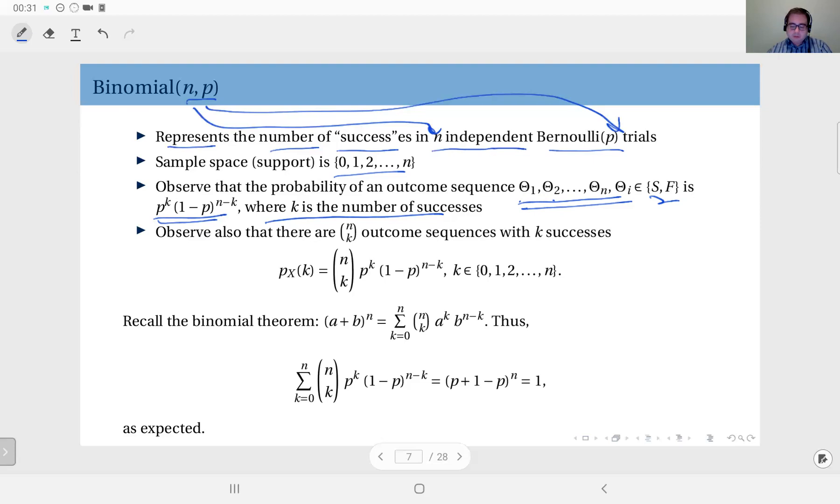Out of n trials, the sequences with exactly k successes in it is n choose k. Clearly, out of n you can choose k successes to place in the sequence. So the number of such sequences is n choose k.